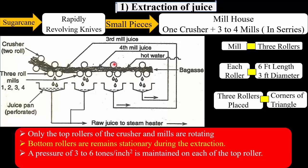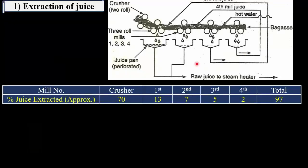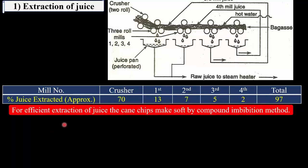A pressure of about three to six tons per square inch is maintained on each of the top rollers. There is also an arrangement to carry the cane chips from the crusher to the mills. From the mill house with four mills, approximately 97% of juice is extracted, as shown in the table. For efficient extraction, the cane chips are made soft using the compound imbibition method.